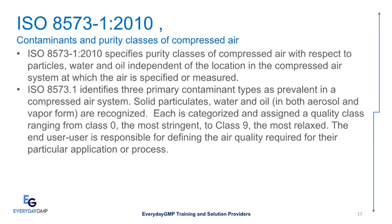ISO 8573-1-2010: Contaminants and Purity Classes of Compressed Air. ISO 8573-1-2010 specifies purity classes of compressed air with respect to particles, water, and oil, independent of the location in the compressed air system at which the air is specified or measured. ISO 8573.1 identifies three primary contaminant types prevalent in a compressed air system: solid particulates, water, and oil, in both aerosol and vapor form. Each is categorized and assigned a quality class ranging from Class 0, the most stringent, to Class 9, the most relaxed. The end-user is responsible for defining the air quality required for the particular application or process.